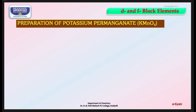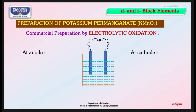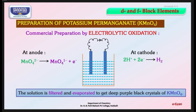Commercially, KMnO4 can be prepared by electrolytic oxidation. Here we have the setup where reactions take place at both cathode and anode. At the anode, MnO4²⁻ is converted into MnO4⁻ and one electron is liberated. At the cathode, 2H⁺ ions from the acidic medium take the electrons liberated at the anode and form H2 gas. The solution is filtered and evaporated to get deep purple colored crystals of KMnO4.